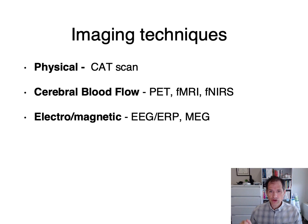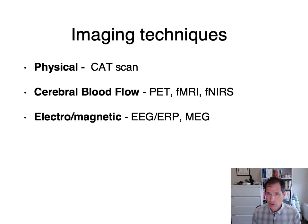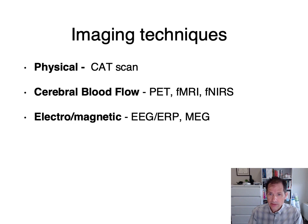First, let's take an overview of the different kinds of techniques we're going to look at. I'm going to briefly talk about physical imaging — that is to say non-functional — which is a CAT scan. These are useful because they can help identify abnormalities in the brain, and they're often used to generate an x-ray of the brain that other neuroimaging techniques can be plotted on top of. Then we'll talk about techniques that measure cerebral blood flow, and some techniques that measure the electrical or magnetic impulses generated by a neuronal spike.